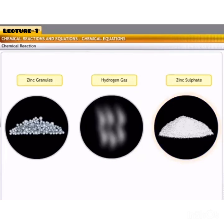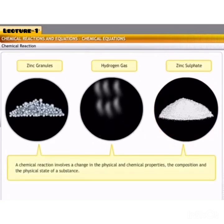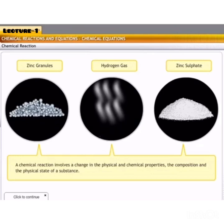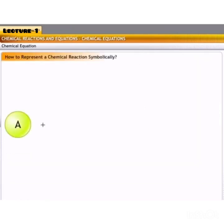Zinc reacted with sulphuric acid to form zinc sulphate, that is a salt. Thus, the composition of the reactants is also changed. Hence, we can say that a chemical reaction involves a change in the physical and chemical properties, the composition and the physical state of the substance.